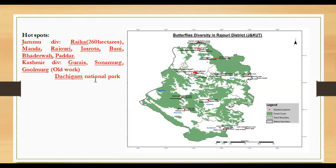Other hotspots include Manda Zoo in Jammu district, Ranjit Sagar Wildlife Sanctuary in Kathua, Banni Wildlife Sanctuary, and the totally unexplored areas of Bhadarwah and Paddar. In the Kashmir division, old hotspots mentioned in literature include Gulmarg, Sonamarg, Dachigam National Park — which has given us around 30 to 40 new sightings in the last 10 years.